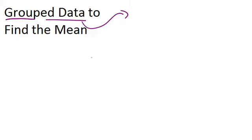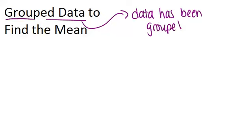Grouped data is data that has been grouped into different sections. So what this means is, you don't know all the specific values of the data. You only know how many numbers appeared in each group.